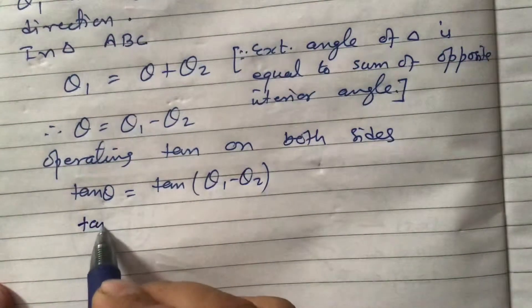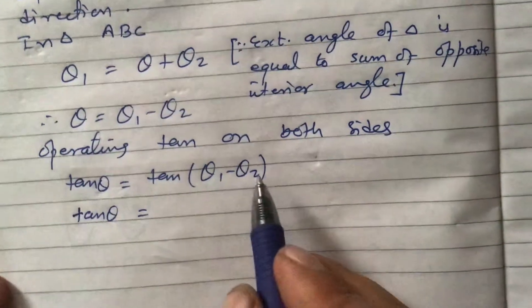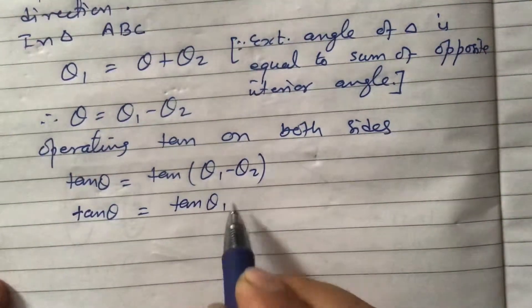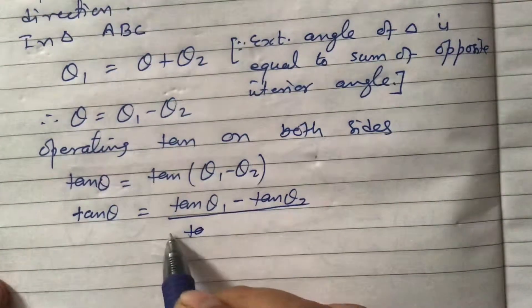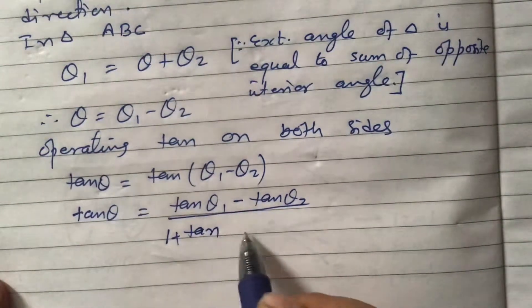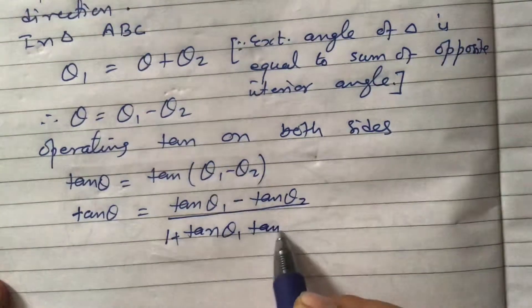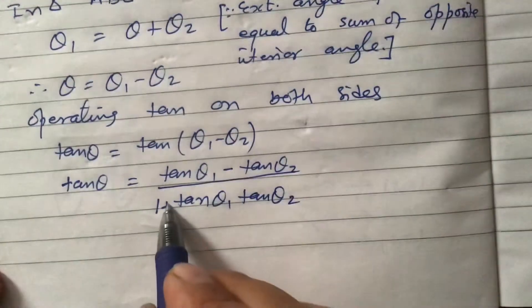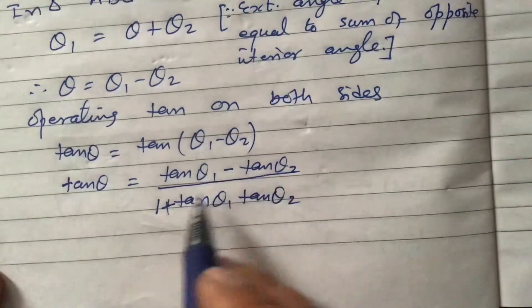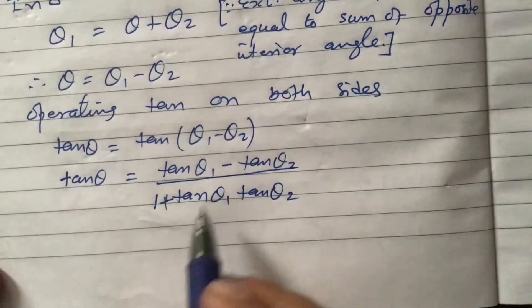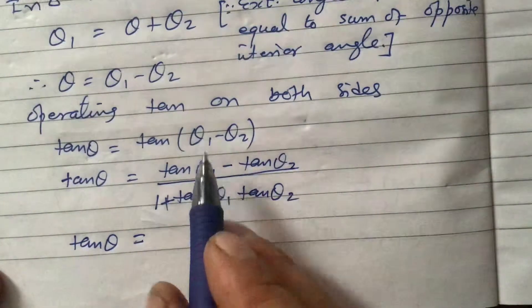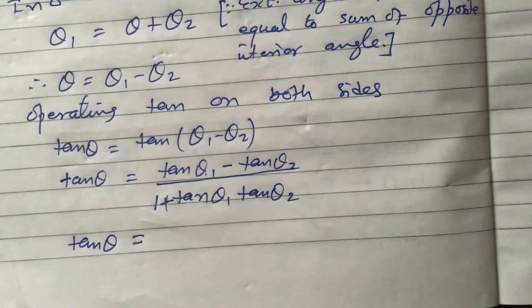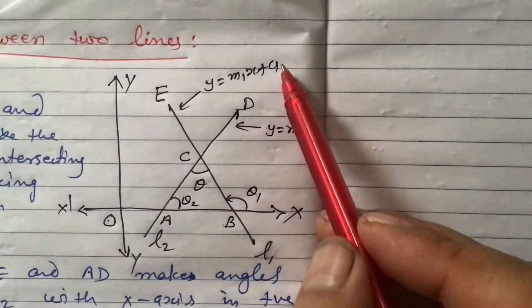Now we can apply the formula for tan(A − B): tan(A − B) = (tan A − tan B) / (1 + tan A · tan B). So tan(theta) equals tan(theta 1) minus tan(theta 2), divided by 1 plus tan(theta 1) times tan(theta 2). Now, tan(theta 1) means m1 — I will show you here.